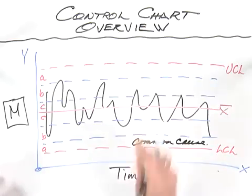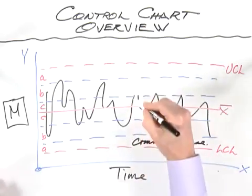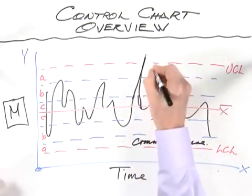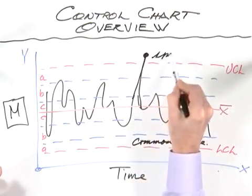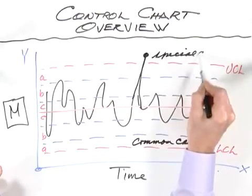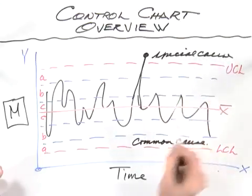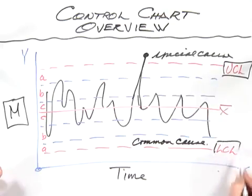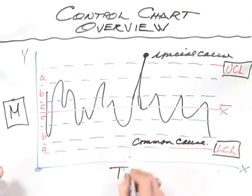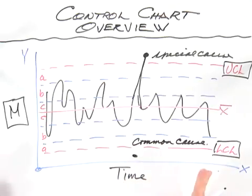On the other hand, if we had a data point that went and exceeded the upper control limit, that's a demonstration of a special cause. That is data that have exceeded the upper estimation of the variation in the process by the upper control limit, or similarly you could have a data point that exceeded the lower control limit.